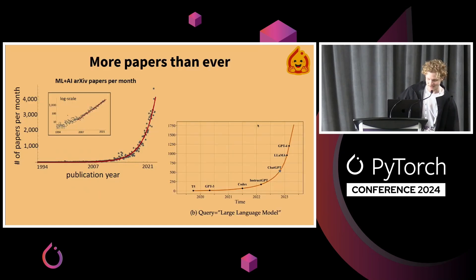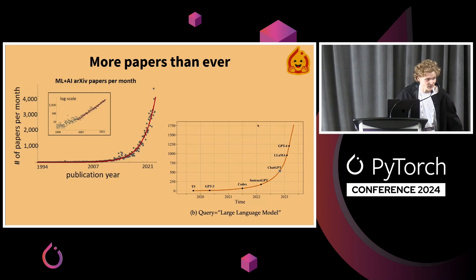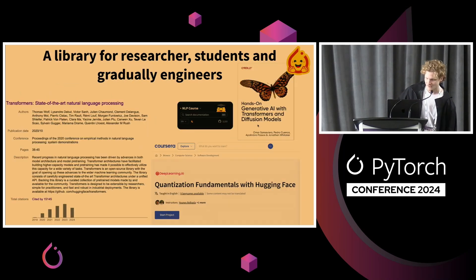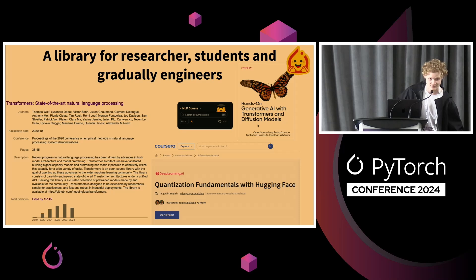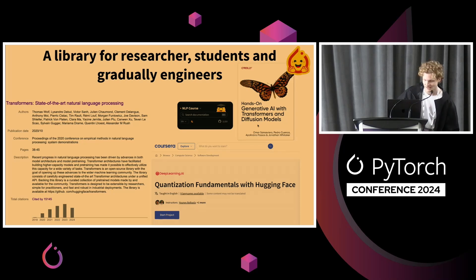As I was saying, the number of papers was very much steadily increasing and the ecosystem was boiling. We can see that in the number of publications related to ML and AI. The Transformers library, which was at the beginning very much research-centric, used by researchers for research, steadily evolved and grew into something used by students, engineers, and everyone.